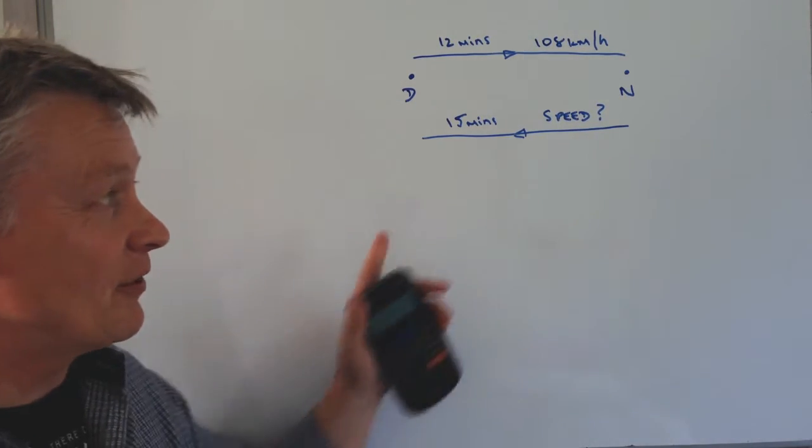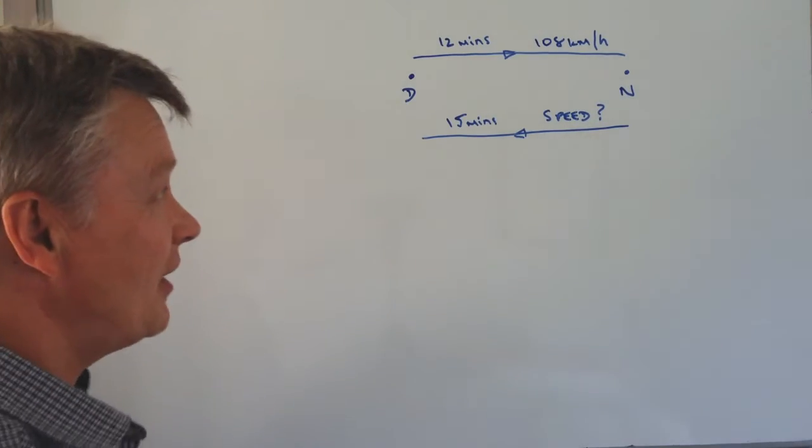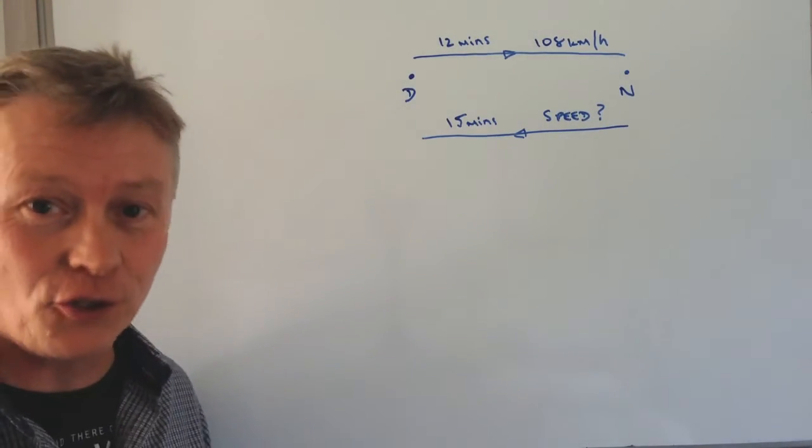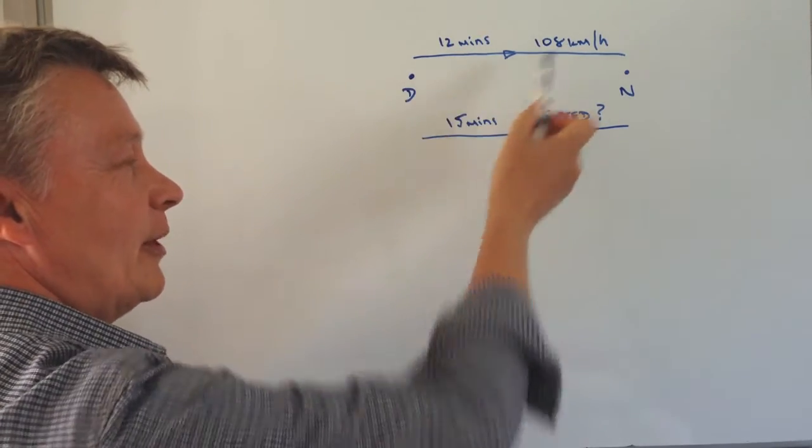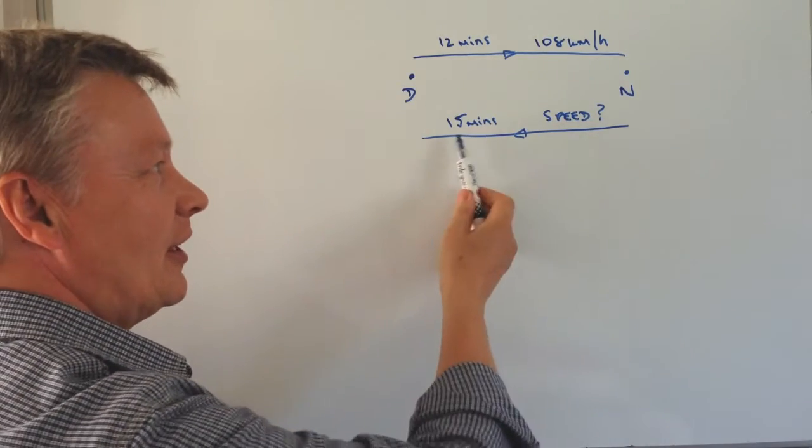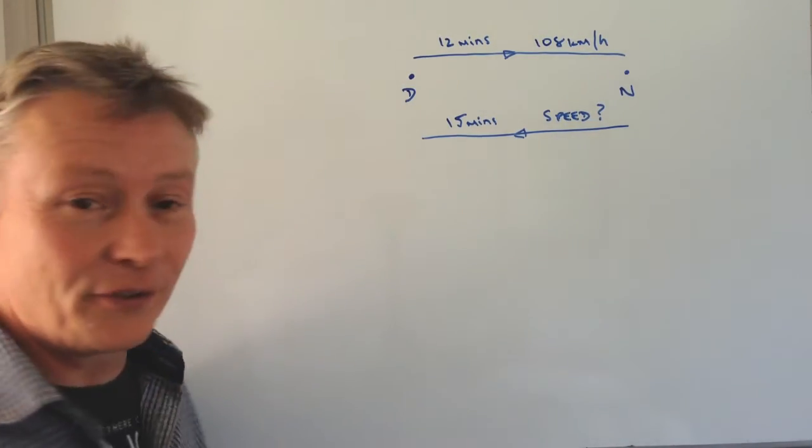I will put a full description of this particular problem into the description below. But essentially it deals with somebody who's going from Durham to Newcastle on a train. On the outward journey it takes 12 minutes and they travel at speed 108 kilometers per hour. On the return journey it takes 15 minutes and the question asks us to work out the speed on the return journey.